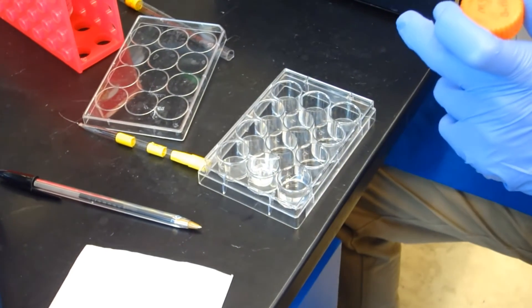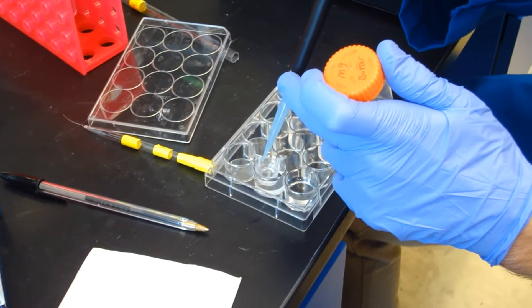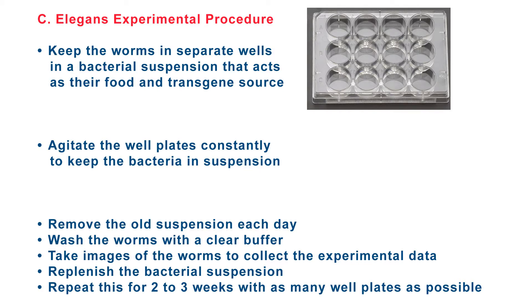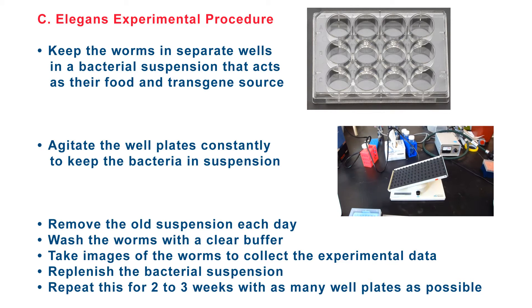Our first step was to meet repeatedly with Dr. Cinquin to understand exactly what he needs. In brief, he needs to keep the worms in separate wells in a bacterial suspension that acts as their food and transgene source, agitate the well plates constantly to keep the bacteria in suspension, remove the old suspension once per day, wash the worms with a clear buffer, take images of the worms to collect the experimental data, replenish the bacterial suspension, and repeat this for two to three weeks with as many well plates as possible.